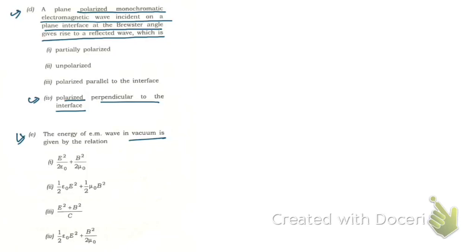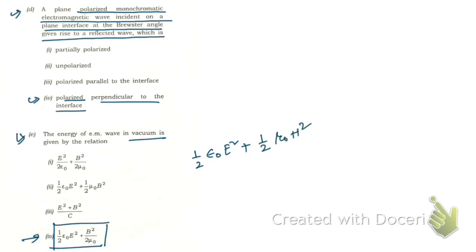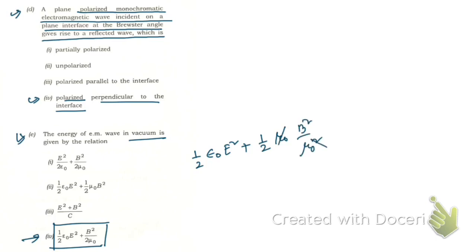The energy of an EM wave in vacuum is given by expression number 4: one-half epsilon-naught E-squared plus the magnetic term. In terms of H, since H equals B over mu-naught, the magnetic energy term becomes mu-naught times H-squared divided by 2, or equivalently B-squared over mu-naught after cancellation.